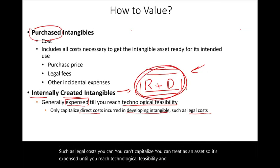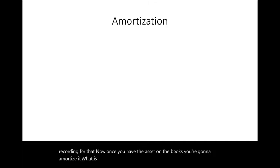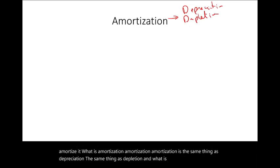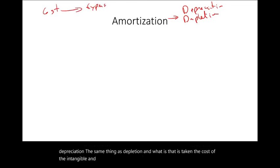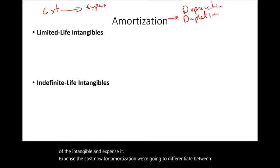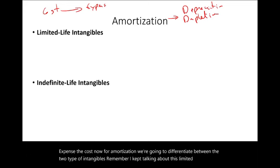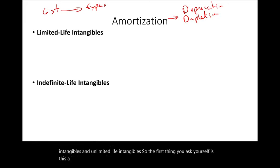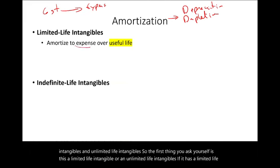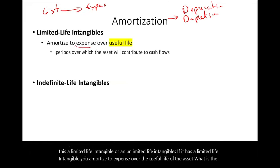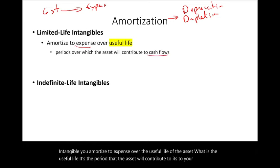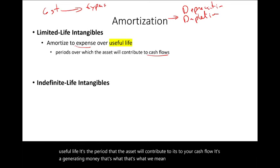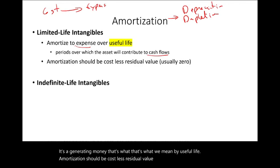Once you have the asset on the books, you amortize it. Amortization is the same thing as depreciation or depletion — taking the cost of the intangible and expensing it. For amortization, we differentiate between limited life intangibles and unlimited life intangibles. If it has a limited life, you amortize to expense over the useful life of the asset — the period the asset will contribute to your cash flow. The formula is cost minus residual value divided by life; usually intangibles have zero residual value and we use straight-line amortization.